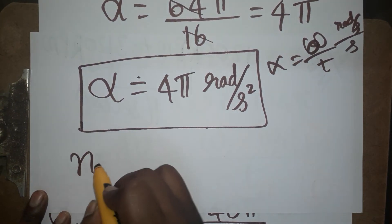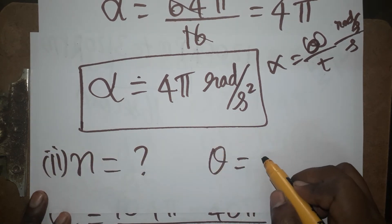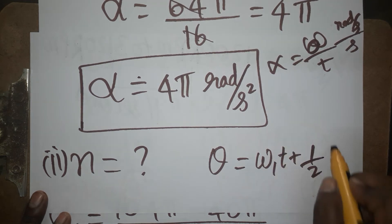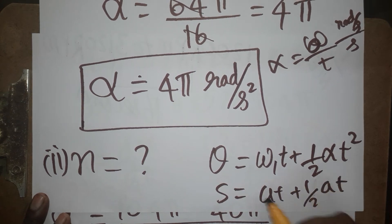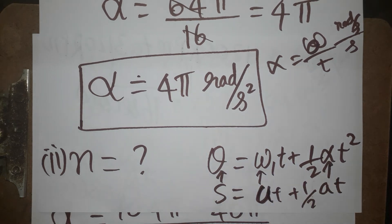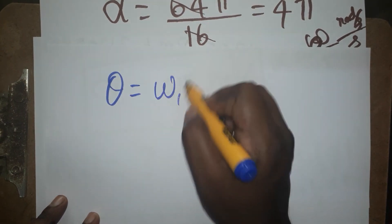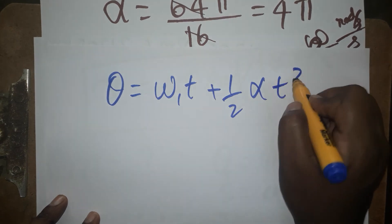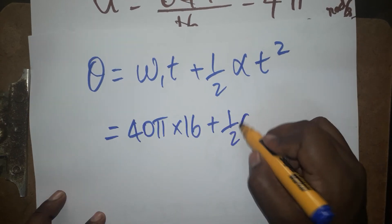Now the next question: how many rotations n? To find this, we find θ using the equation θ = ω1·t + ½α·t². This is analogous to the linear motion equation s = ut + ½at², where in rotational motion the angular displacement θ replaces s, and the initial angular velocity ω1 replaces u. Substituting: ω1 = 40π and t = 16.